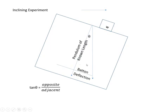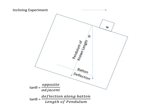Here's our hypotenuse, here's our opposite. This is our angle, this is the leg opposite, the side opposite, this is the side adjacent. So we can say that tan θ equals opposite over adjacent. And now we can name that opposite—that opposite is the deflection along the batten, and the adjacent is the length of the pendulum.